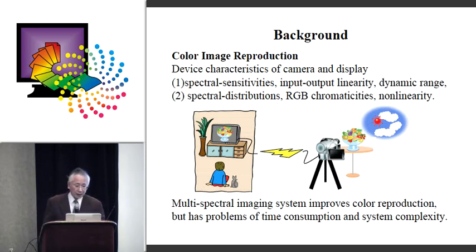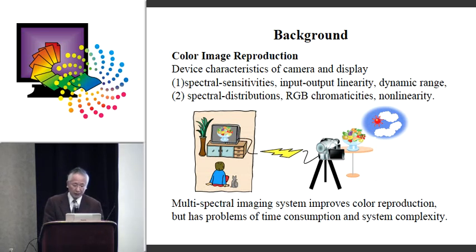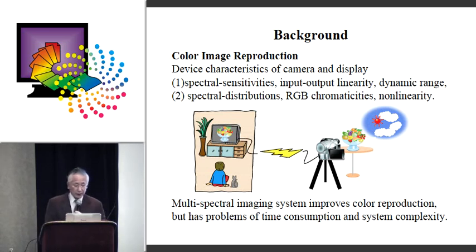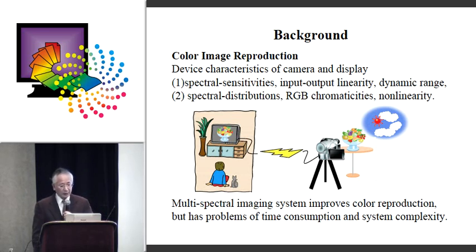The background. The color interaction of objects in the natural scene is normally performed using a camera and display. In such a case, we have to take account of device characteristics of the camera and display — for example, the spectral sensitivity function, input linearity, and gamma for the camera; and the spectral distribution of phosphors, chromatic coating, and linearity for the display.